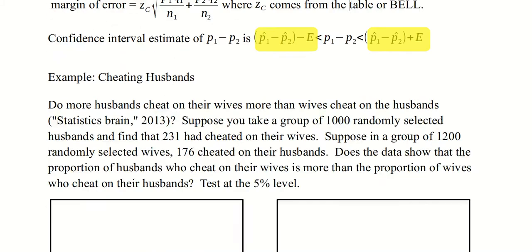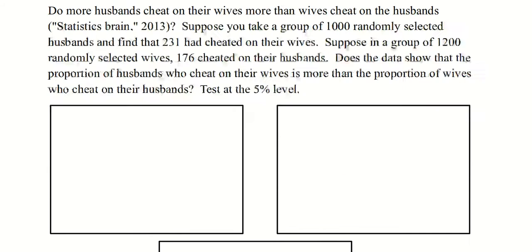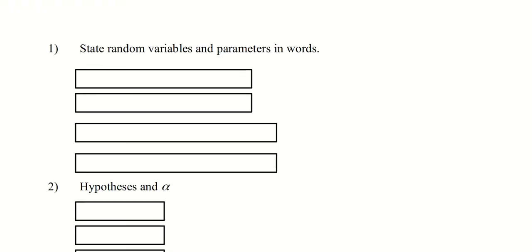Let's look at an example — cheating husbands, from our book. Do more husbands cheat on their wives than wives cheat on their husbands? Suppose you take a group of 1,000 randomly selected husbands and find that 231 had cheated on their wives. Suppose that in a group of 1,200 randomly selected wives, 176 had cheated on their husbands. Does the data show that the proportion of husbands who cheat on their wives is more than the proportion of wives who cheat on their husbands? Alpha is 0.05. We're going to do this with our calculator, but first let's start this hypothesis test.